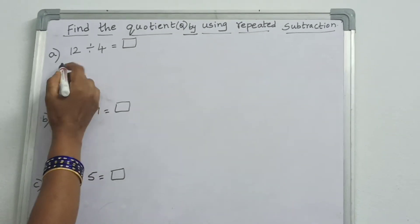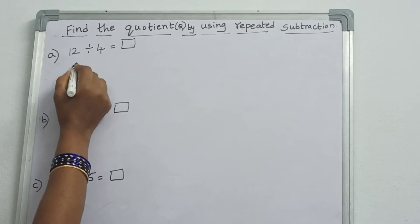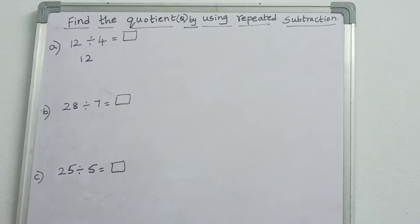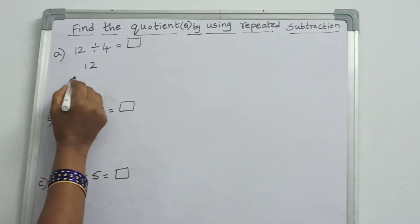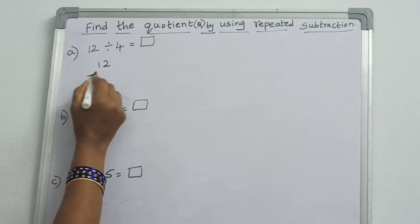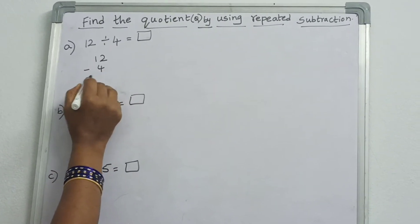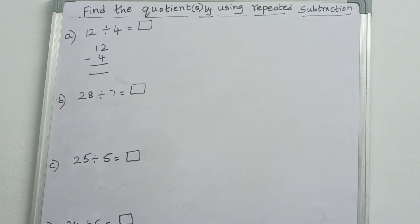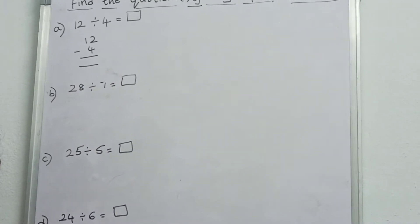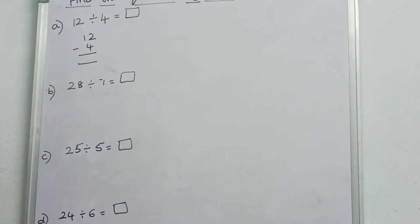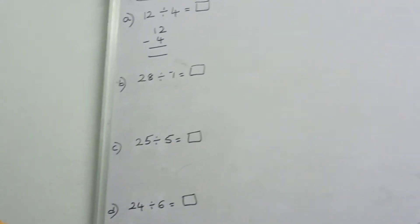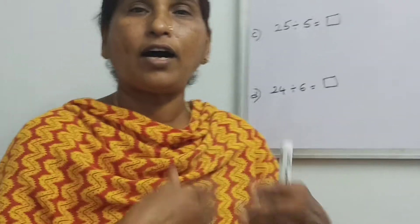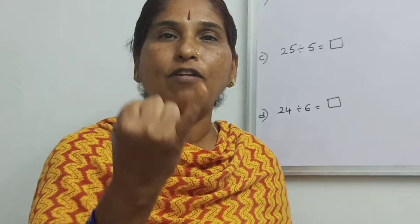First, take the dividend. The first number is 12. Then you have to subtract with the divisor, minus 4. So how will we do the subtraction? Count from the divisor up.